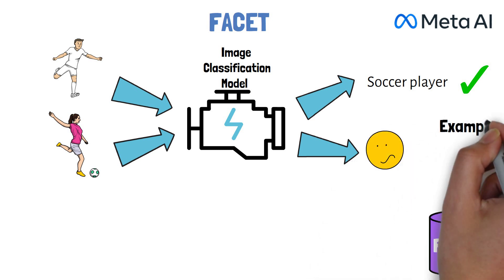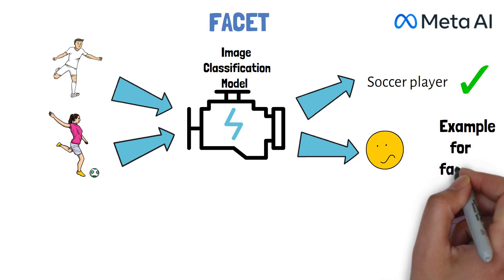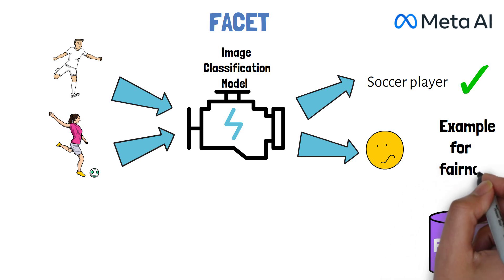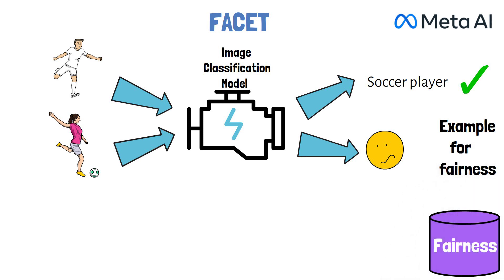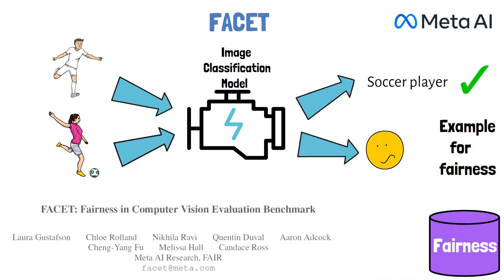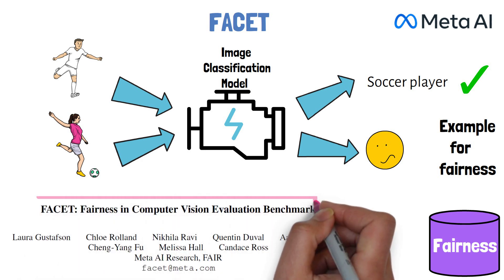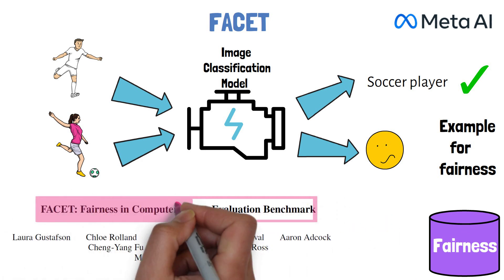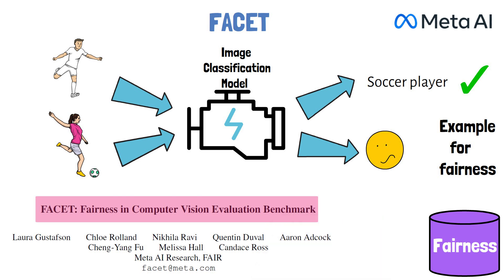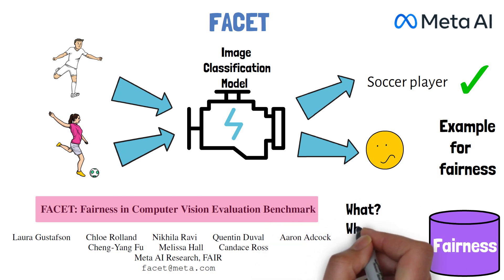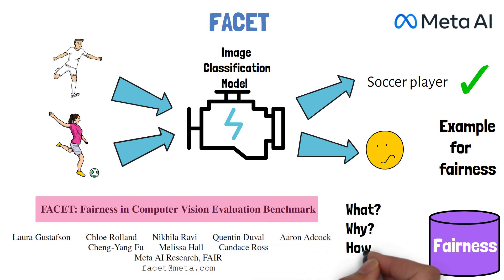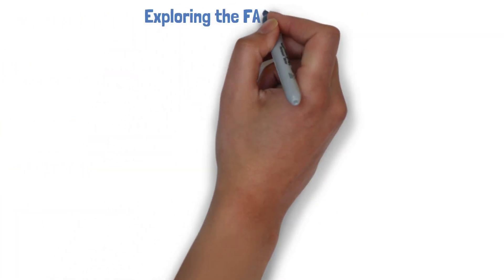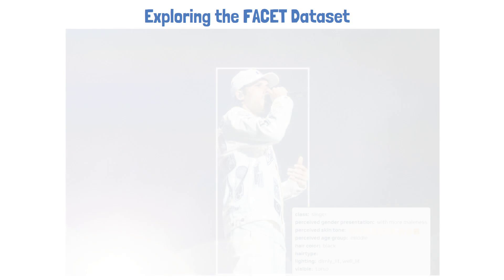This is just an example of what fairness means, and later on we'll see real examples that the Facet dataset helped to find. The Facet dataset was presented in a research paper titled 'Facet: Fairness in Computer Vision Evaluation Benchmark.' In this video we'll explain the research paper to understand what kind of data this dataset has, what we can do with it, and how it was created. Let's start by exploring what kind of data we have in the Facet dataset.